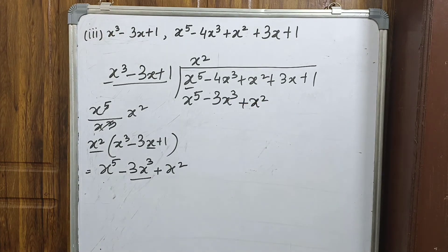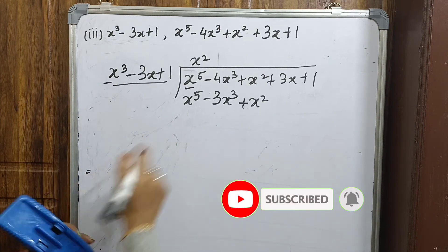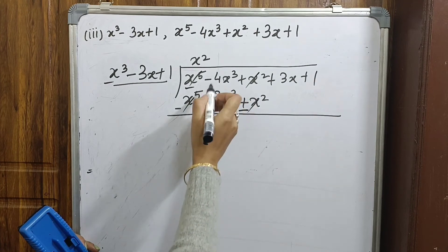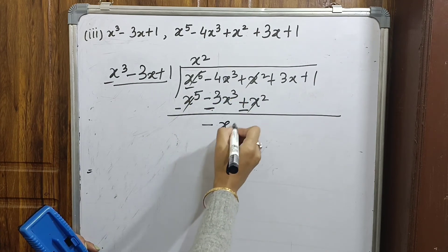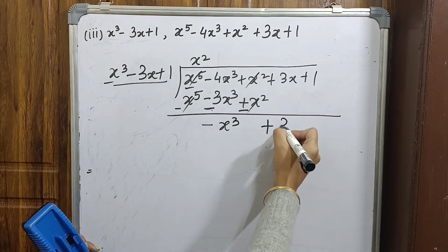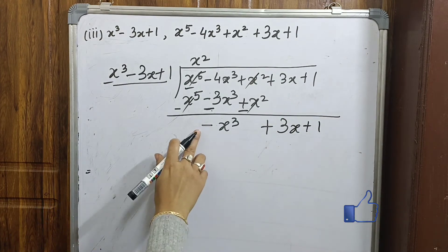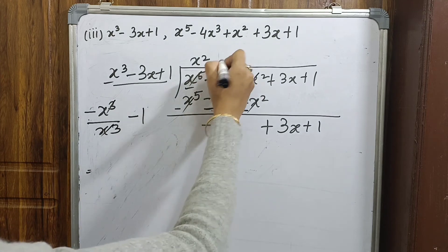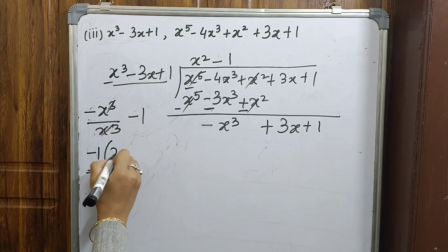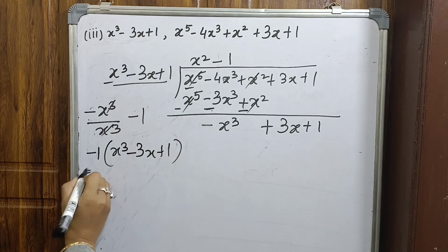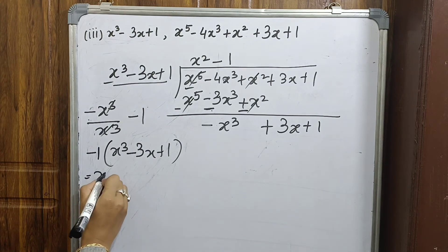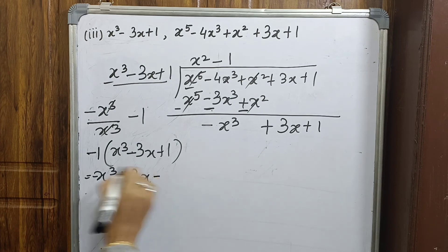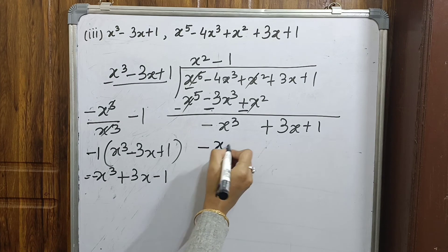We subtract: x⁵ cancels, x² cancels, and -4x³ minus -3x³ gives -x³. We bring down +3x + 1, so we have -x³ + 3x + 1. We divide -x³ by x³ to get -1. We multiply -1 by (x³ - 3x + 1), giving -x³ + 3x - 1.